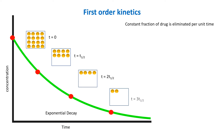The first 50% reduction in drug concentration is the first half-life of the drug. So in this example, the drug molecules reduce from 16 to 8.